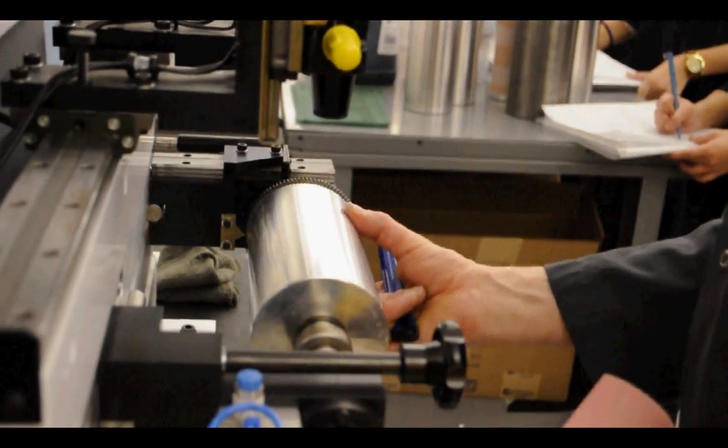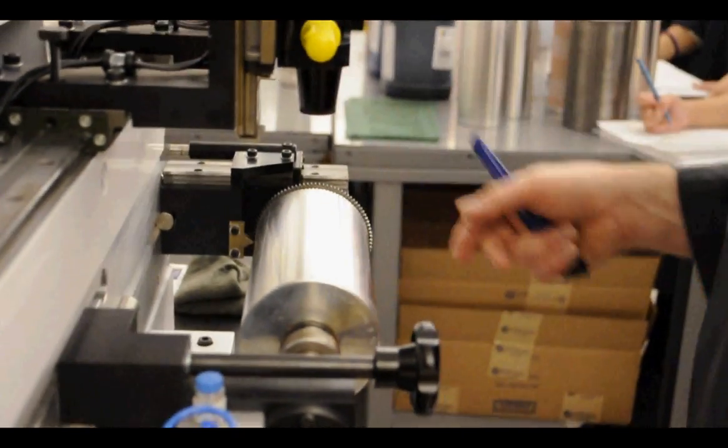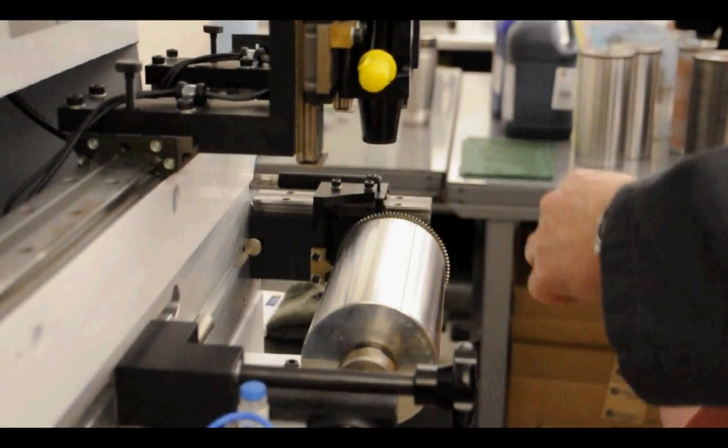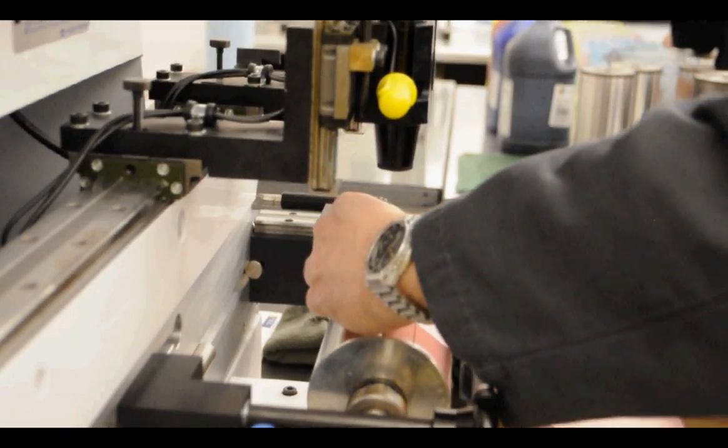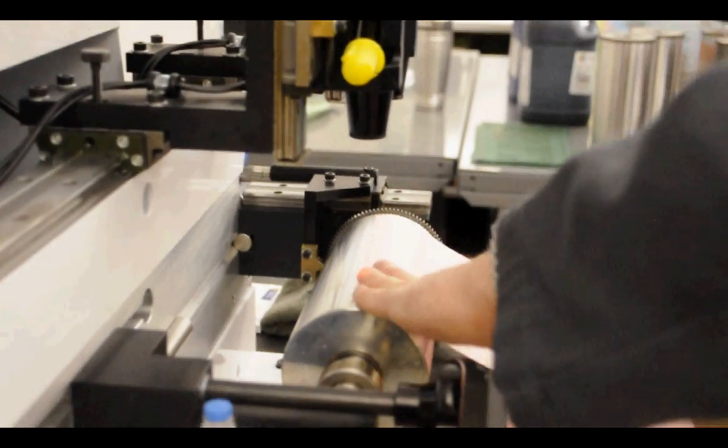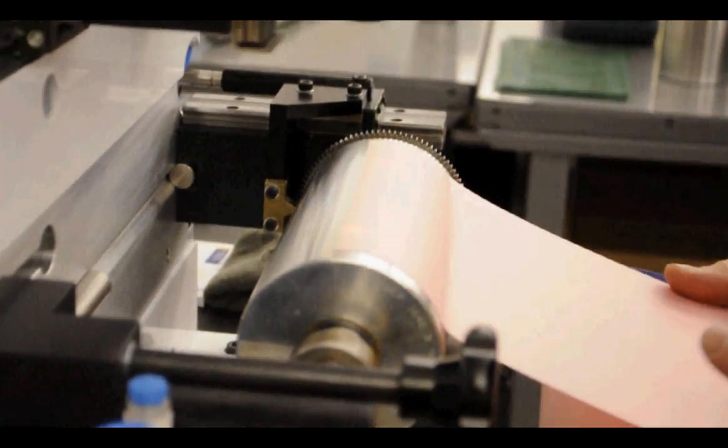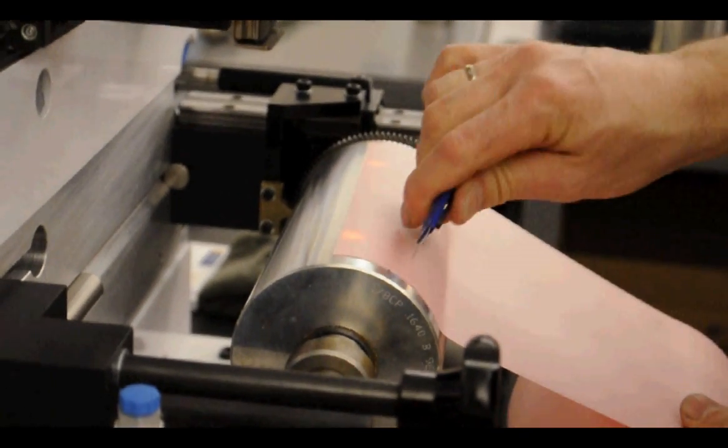I'm going to first secure the roller from turning with this bracket here. Try to mount the tape as centered and as straight as possible. You have a groove here.